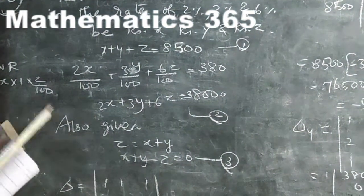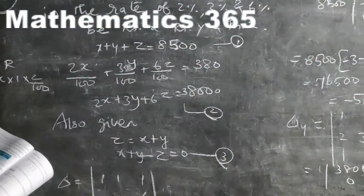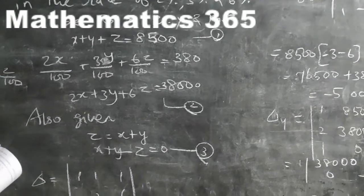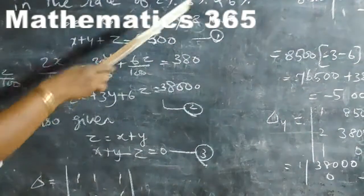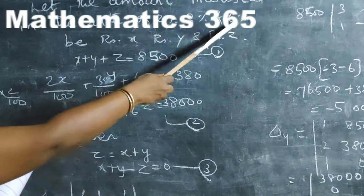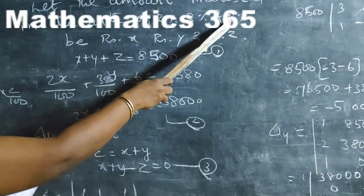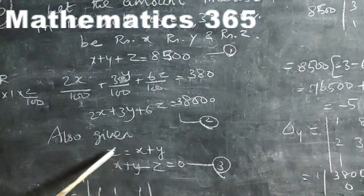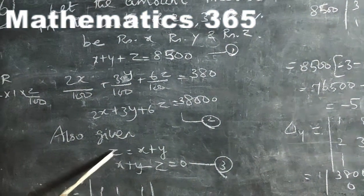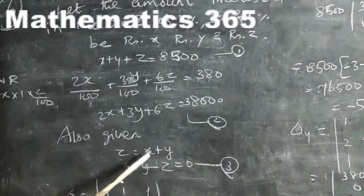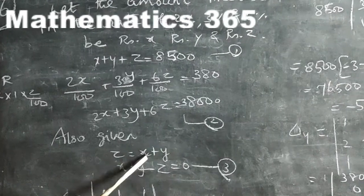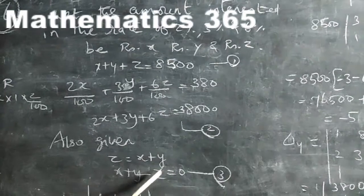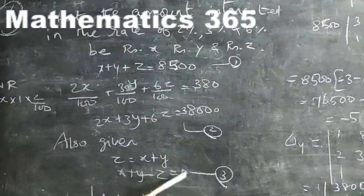The third equation: the amount invested at 6%, which is z, equals the sum of the other two investments, x and y. So z equals x plus y. Rearranging: x plus y minus z equal to 0. The coefficients are: x coefficient is 1, y coefficient is 1, z coefficient is minus 1.